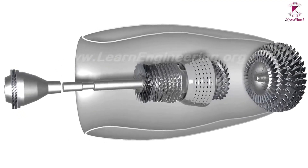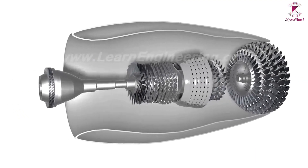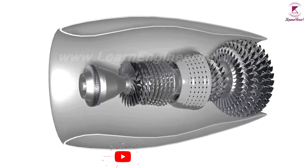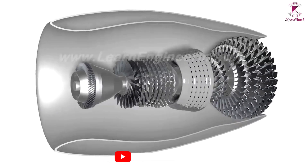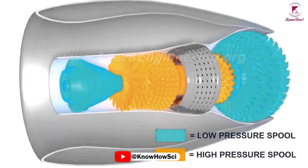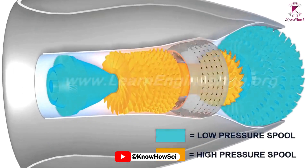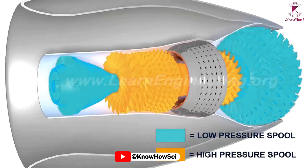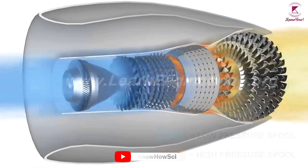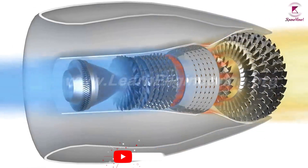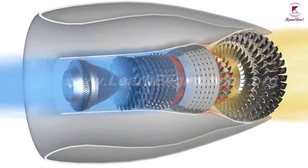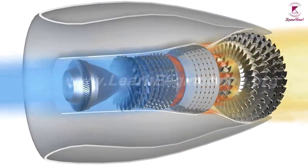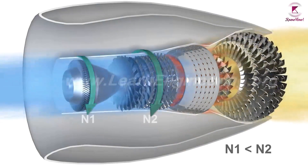A dual-spool engine has two concentric shafts that rotate at different speeds. One connects the high-pressure turbine stages to the high-pressure compressor, and the other connects the low-pressure turbine stages to the low-pressure compressor and fan.